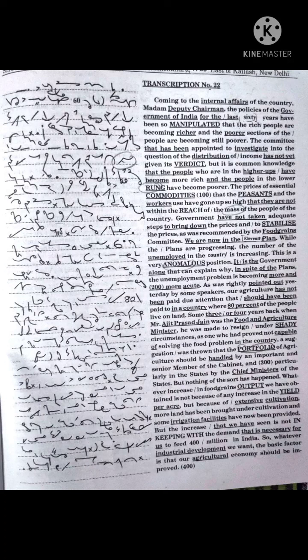We are now in the 11th plan. While the plans are progressing, the number of the unemployed in the country is increasing. This is a very anomalous position. It is the government alone that can explain why in spite of the plans the unemployment problem is becoming more and more acute.